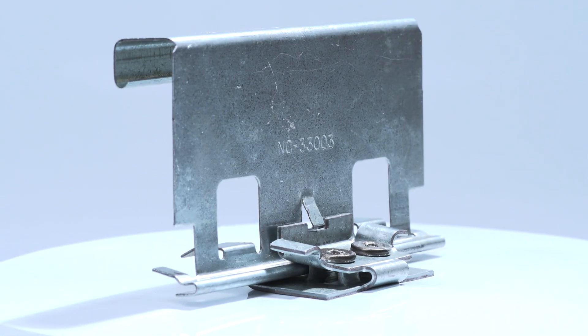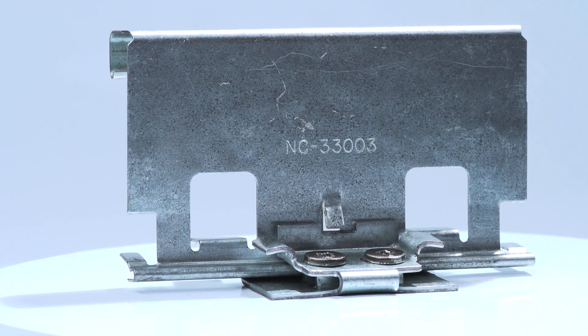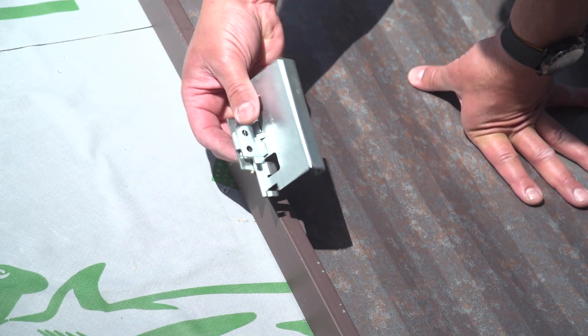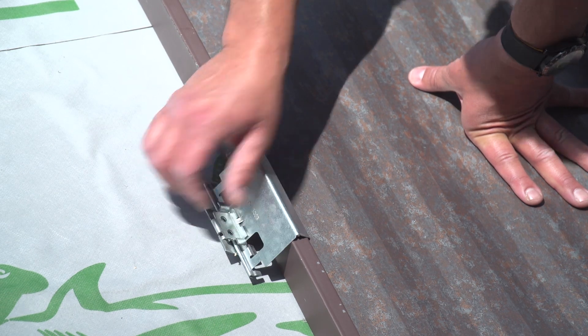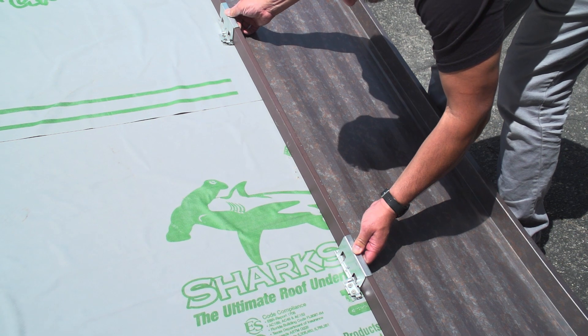A floating clip is a two-piece clip that is seamed into the panel's vertical leg. A floating clip is considered a type of sliding clip. Unlike a one-piece clip that is commonly used with snap-lock standing seam panels, the two-piece clip includes the body of the clip and the base.